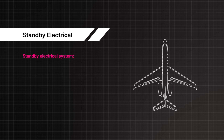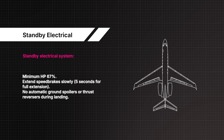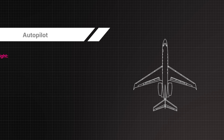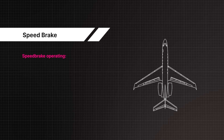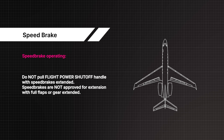Standby electrical system: minimum HP 67%; extend speed brakes slowly, 5 seconds for full extension; no automatic ground spoilers or thrust reversers during landing. Minimum autopilot engage height: 200 feet. Speed brake operating: do not pull flight power shut-off handle with speed brakes extended; speed brakes are not approved for extension with full flaps or gear extended.